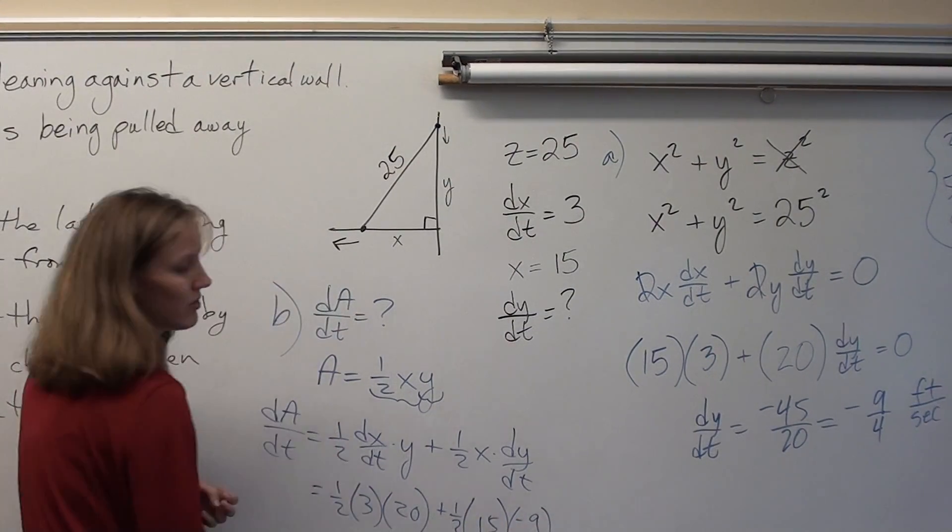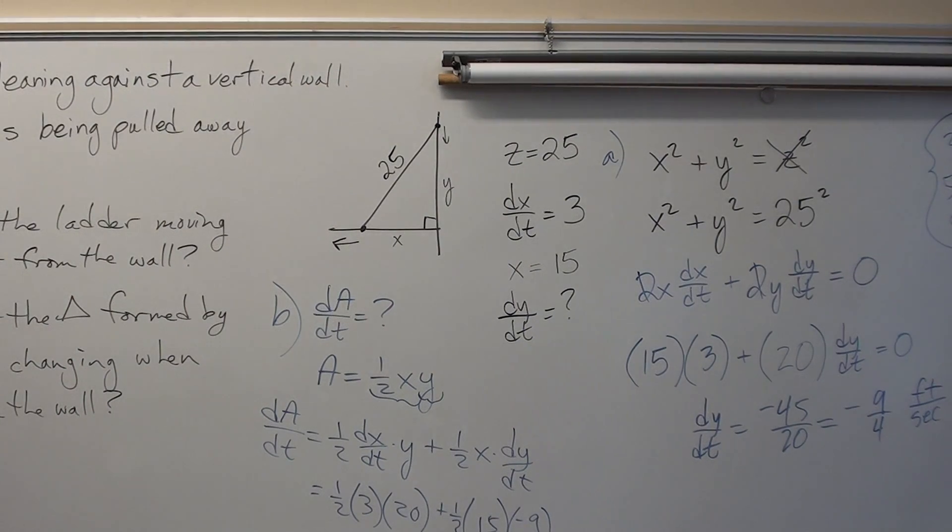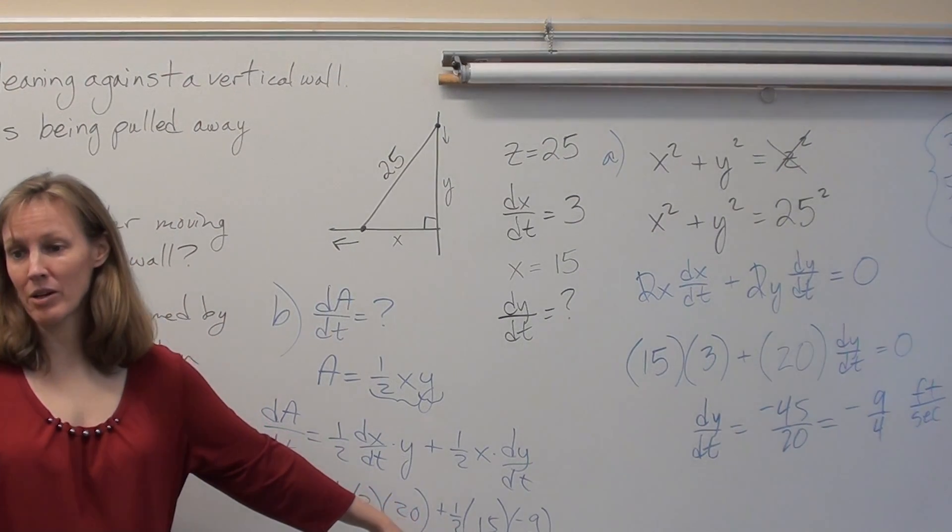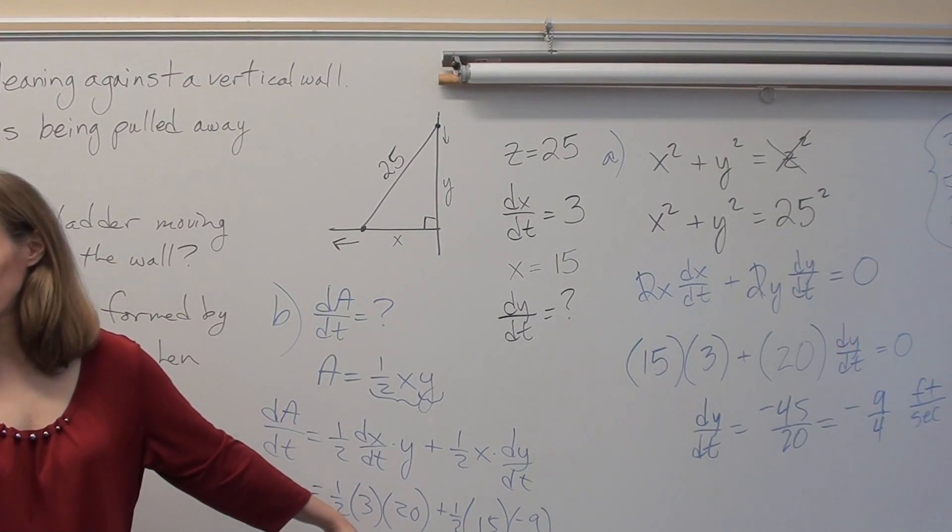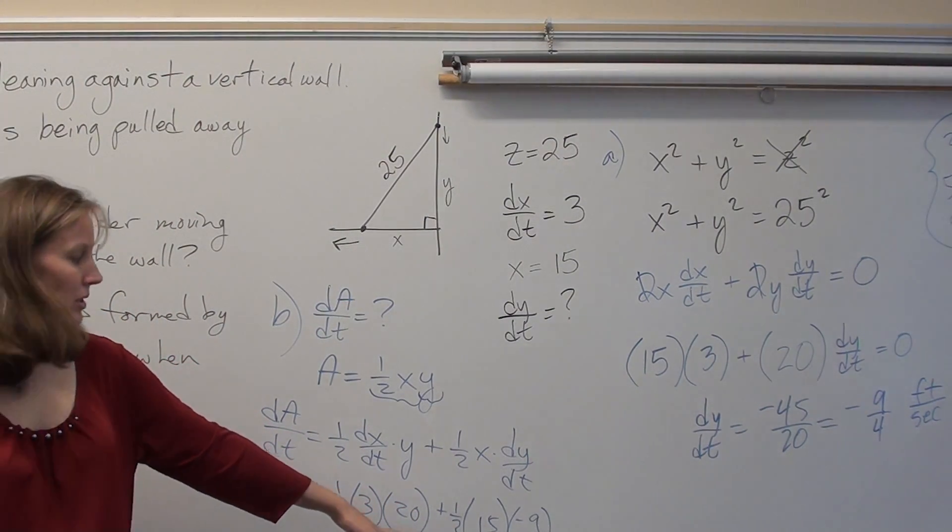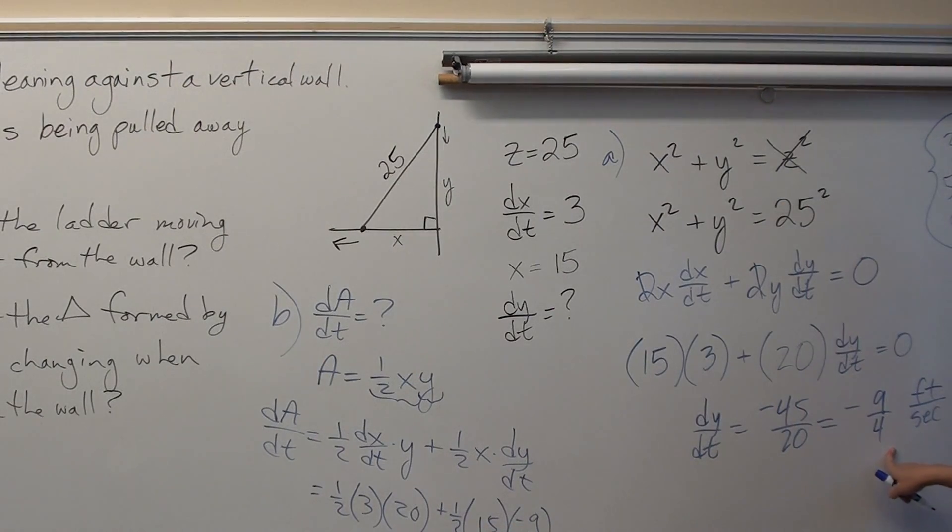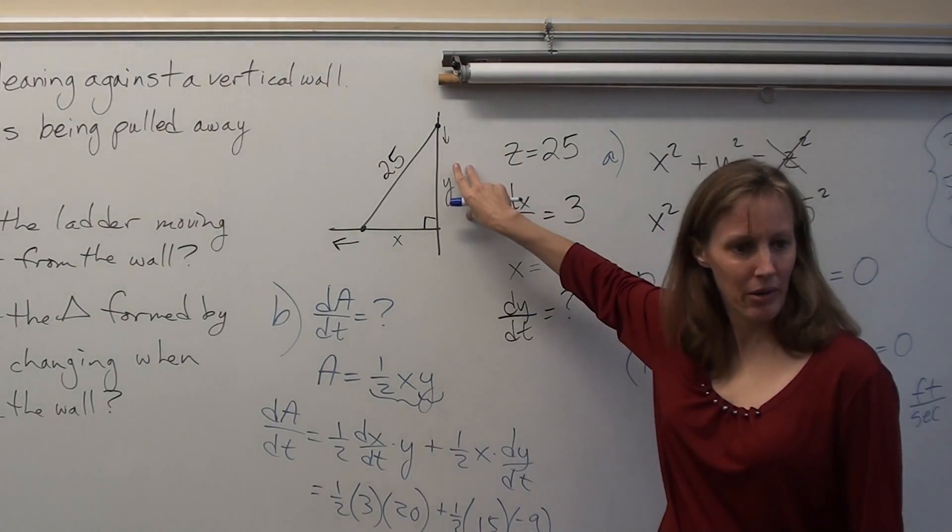Whoa, that negative is really important, isn't it? Because if we didn't have it, we'd be adding these numbers instead of subtracting. Our number would be way, way wrong. So, it's really important that for a rate... By the way, does it make sense that our rate was negative? Yeah, because the y dimension is getting smaller, right?